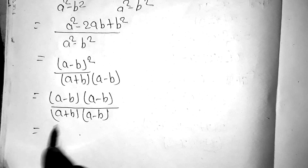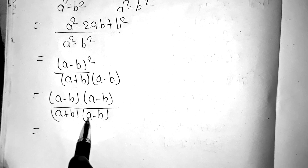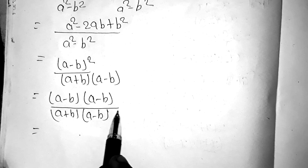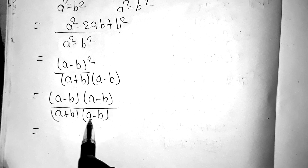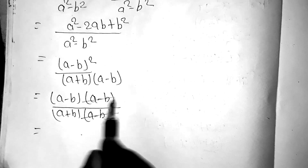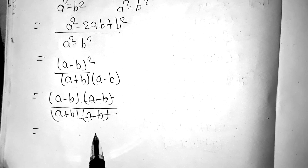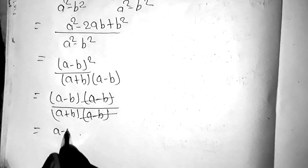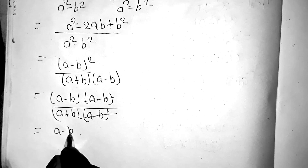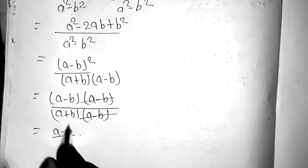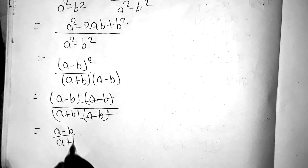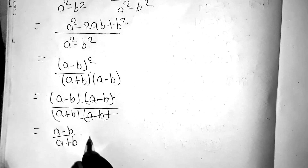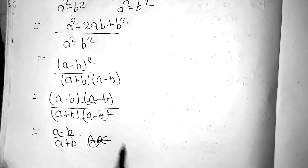Now we have a minus b over a minus b, so a minus b and a minus b cancel out. So the final answer is a minus b plus a plus b.